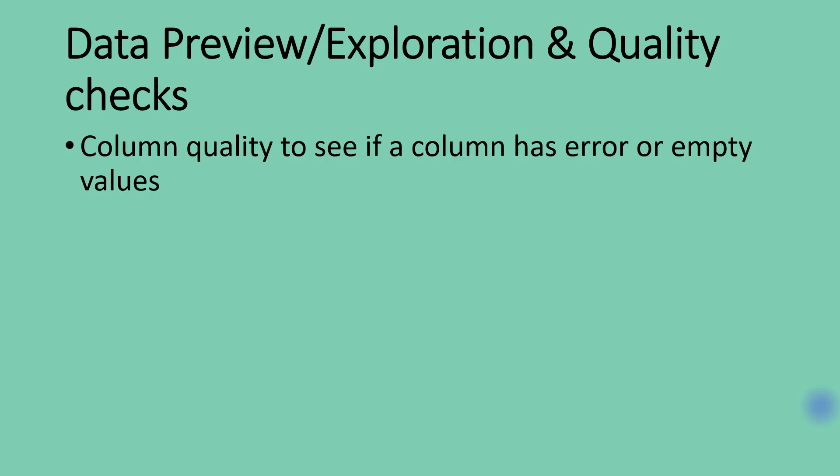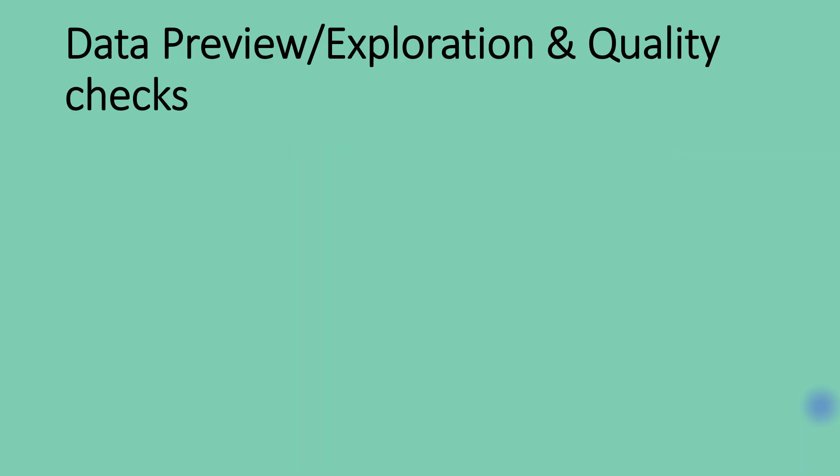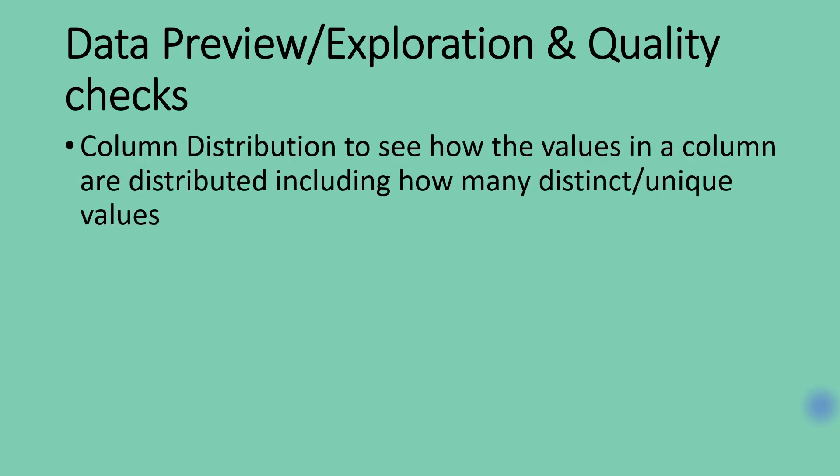Apart from column quality, the second preview option that we have is column distribution. Column distribution allows us to see the values in a column and how those values are distributed. It also shows us the number of distinct and the number of unique values that you have inside a column.